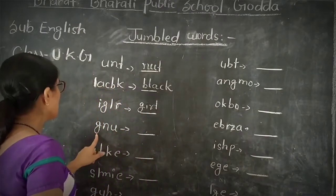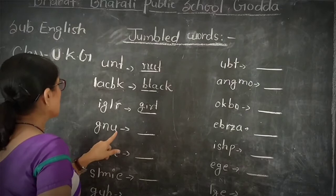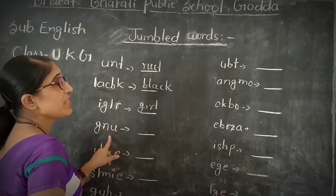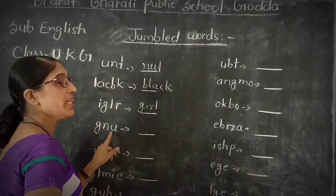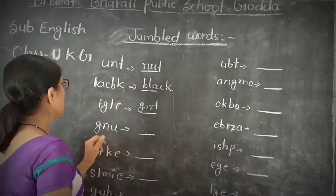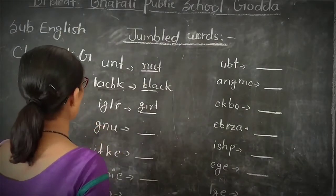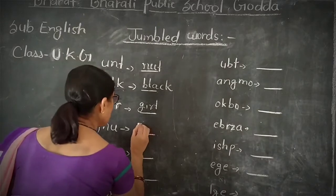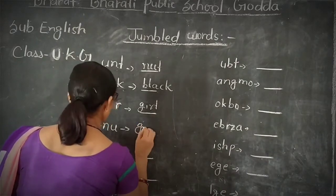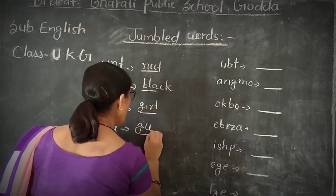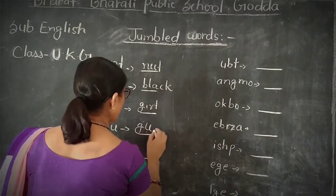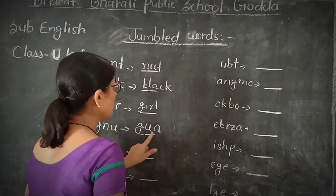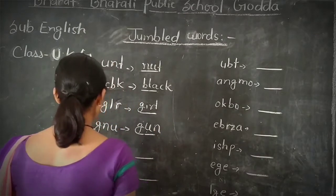There is G and U. Without meaning — a word without meaning. We will write the correct word here. First letter: G. Second letter: U. And third letter: N. So G, U, N — GUN. Next word.